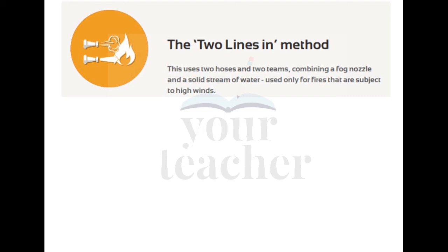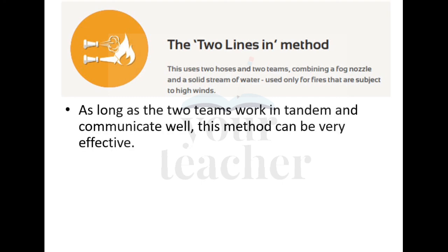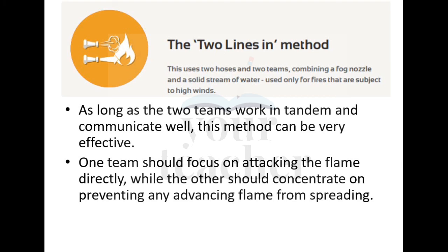The two lines-in method is generally used for fires subject to high winds — unlike the other techniques discussed, which are suited to non-windy atmospheres. As long as the two teams work in tandem and communicate well, this method can be very effective. One team focuses on attacking the flame directly while the other concentrates on preventing the advancing flame from spreading.